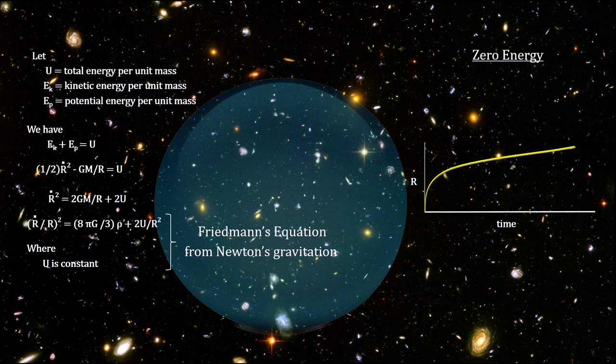It will be a positive number if the kinetic energy is large enough to overcome the gravitational binding energy. In this case, the universe will expand forever. This is like the bullet examples having exceeded the escape velocity.